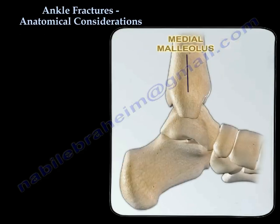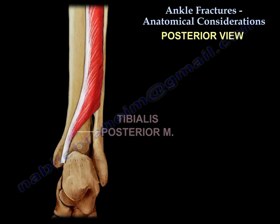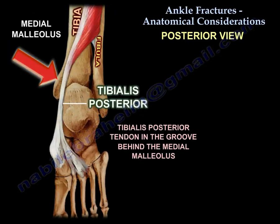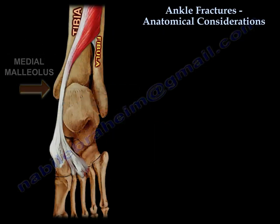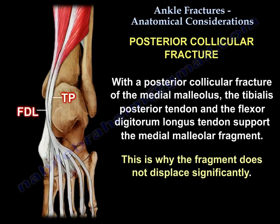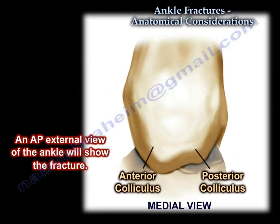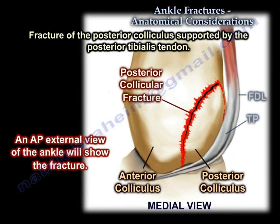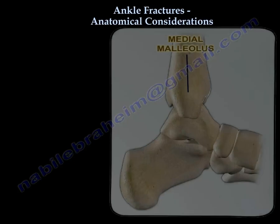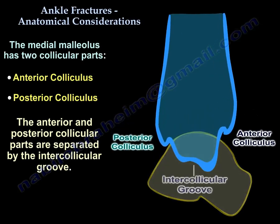The medial malleolus has a groove for the posterior tibial tendon. When a posterior collicular fracture occurs, this tendon supports the fracture so it doesn't displace. The medial malleolus has two collicular parts: the anterior colliculus and the posterior colliculus, with an inter-collicular groove between them.